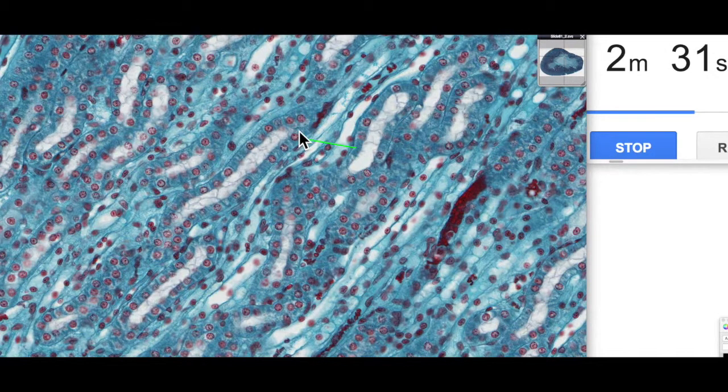So this is a simple cuboidal epithelial lining. You can see all the nuclei in a row here. Typical of a cuboidal cell is a nice round nucleus, as you can see there.